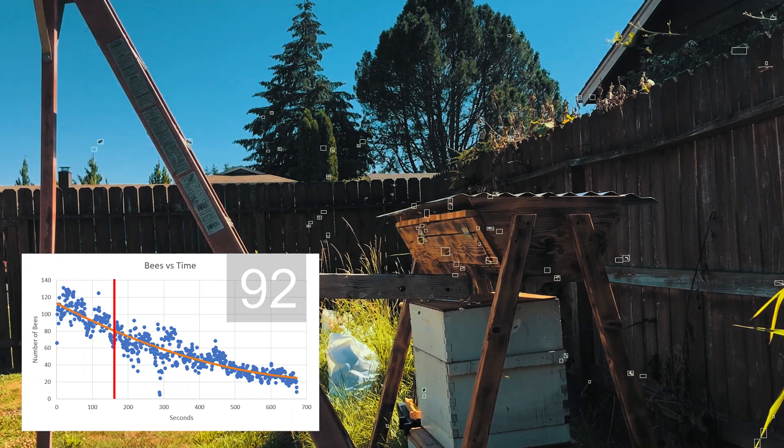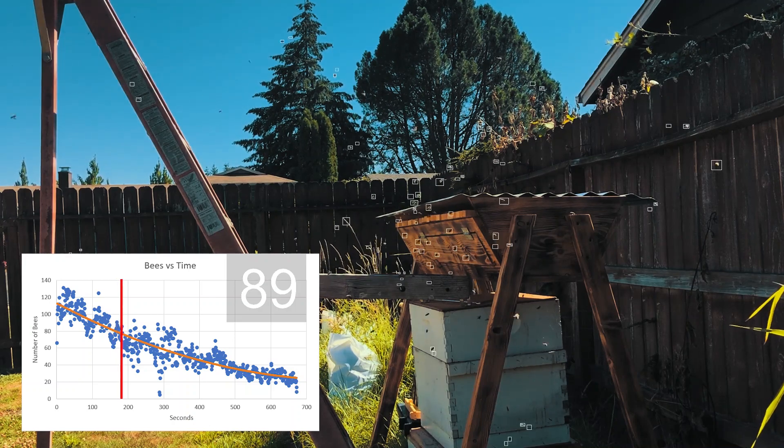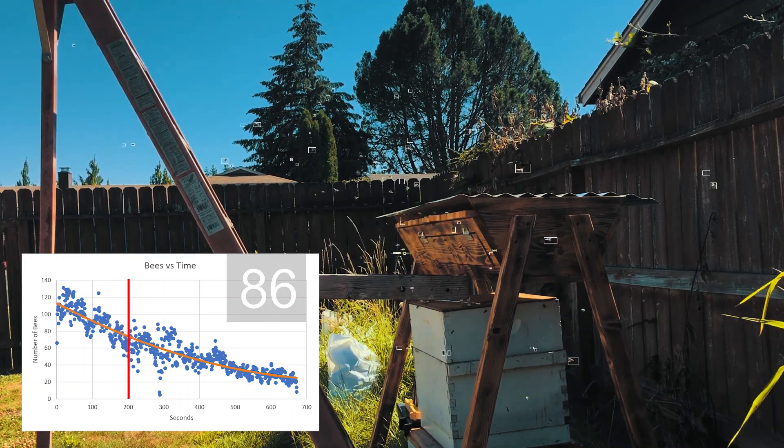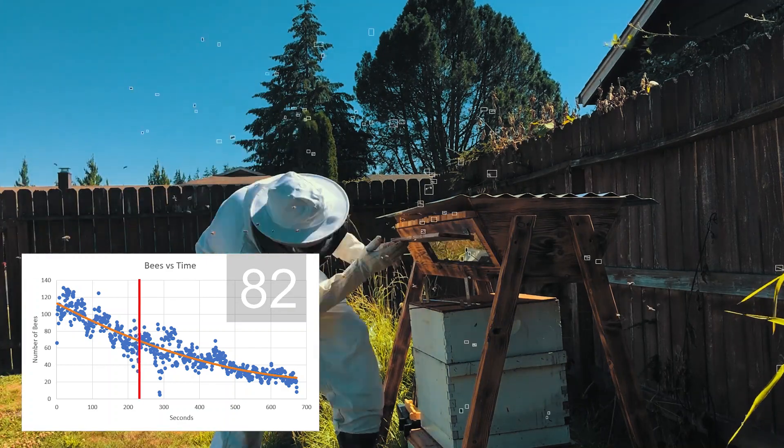You can see from the data that we only witnessed the end of the raiding party and that in the end there were once again only about 20 bees outside my hive like normal.